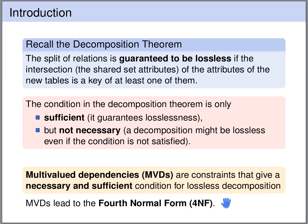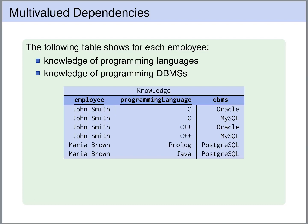We will also see that multivalued dependencies are used to define what's called the fourth normal form. Let's have a look at an example. Here we have a table that stores information about the knowledge of employees: we have the employee, we store what programming languages the employee knows, and we store what database management systems the employee is acquainted with. Now in this table we do not have any non-trivial functional dependencies.